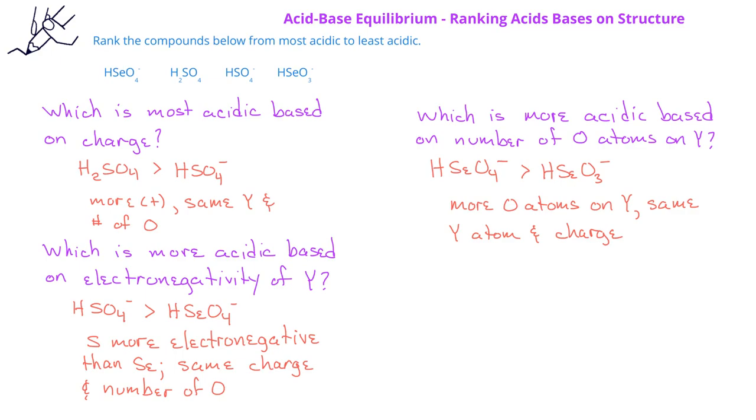Therefore, the final ranking of these four compounds would be H2SO4 is most acidic, HSO4- is second most, HSeO4- would be third most acidic, and HSeO3- would be the least acidic of these four compounds.